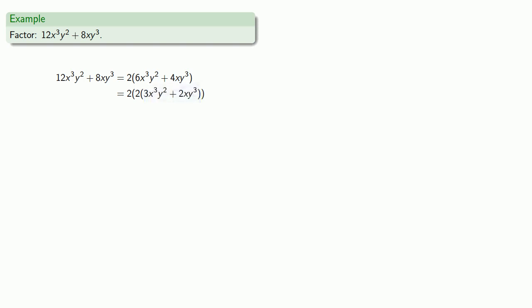Because it's a sum, I might be able to factor it further. We notice that 3X cubed Y squared and 2XY cubed both have a factor of X. 3X cubed Y squared is X times 3X squared Y squared, and 2XY cubed is X times 2Y cubed. This sum can be rewritten where both terms are products of X and something, and I can use the distributive property.